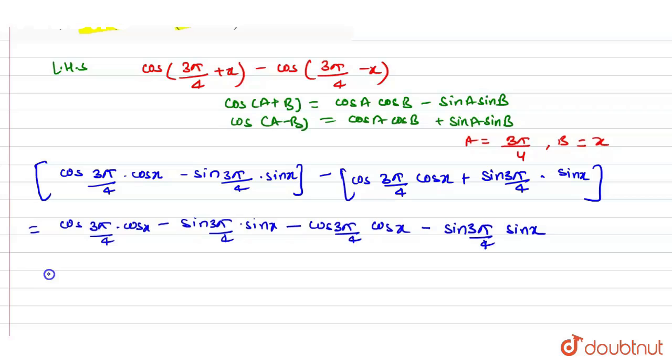So in the next step we will have this cos 3π/4 into cos x will be cancelled out. And the left part is minus of sin 3π/4 into sin x and minus of sin 3π/4 into sin x.